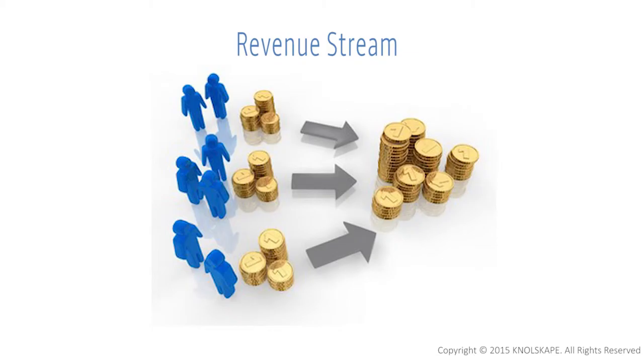Now let's look at revenue streams. The revenue streams building block represents the cash a company generates from each customer segment. Asset sale, usage fee, licensing, subscription fees, and leasing are the most common streams of revenues earned by companies. A business model can involve two different types of revenue streams: transaction revenues resulting from one-time customer payments, and recurring revenues resulting from ongoing payments to either deliver a value proposition to the customer or provide post-purchase customer support.